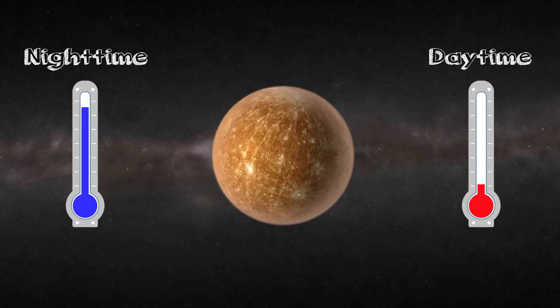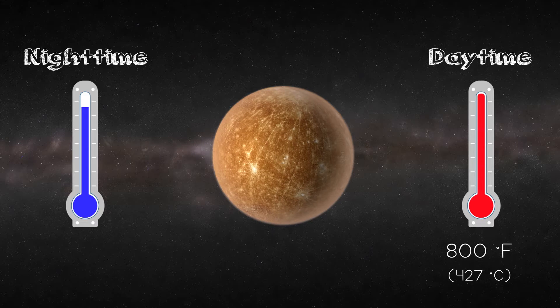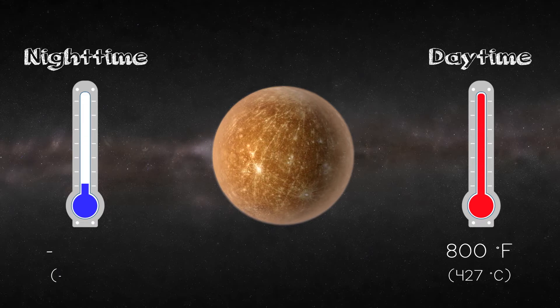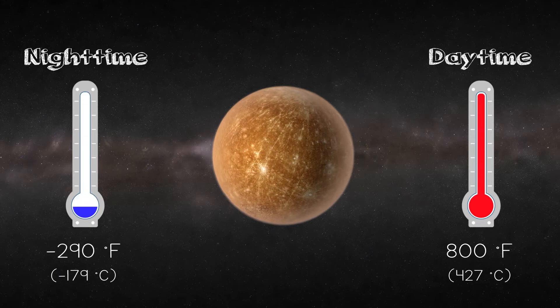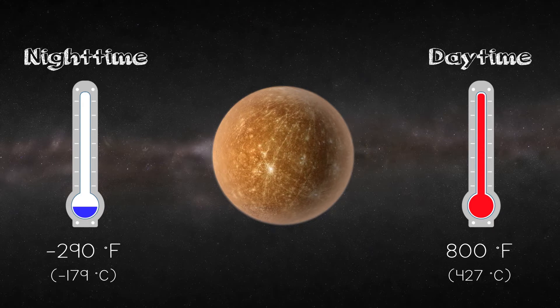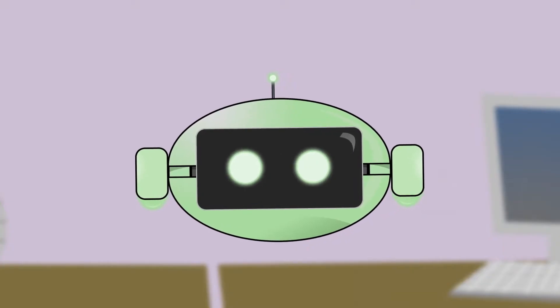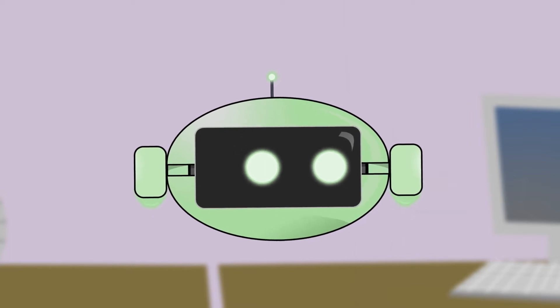You sure would. But temperatures in the daytime can reach 800 degrees Fahrenheit. And at night, can drop down to 290 degrees Fahrenheit. So the bright sun would be the least of the problems for humans. Since it's so close to the sun, it probably has a short year. Is that true?